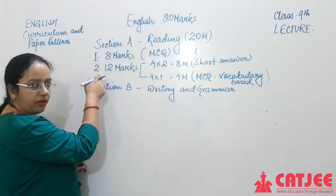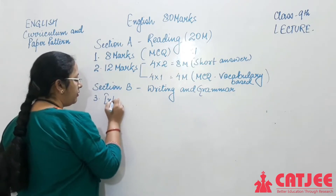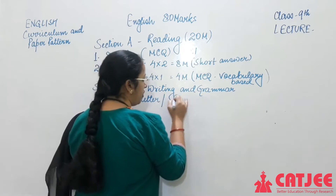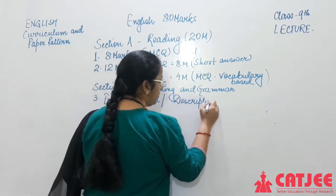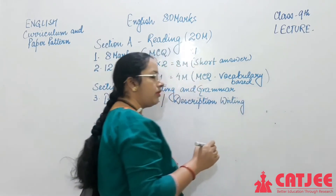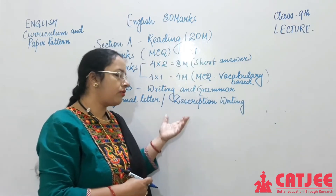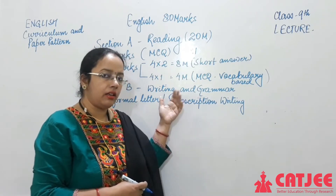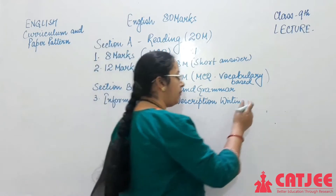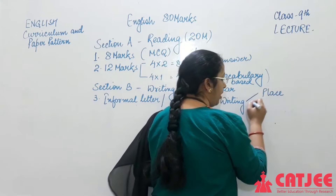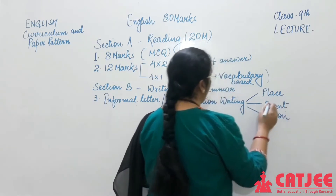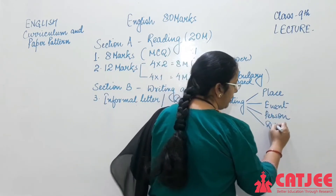Questions 1 and 2 are already covered in Section A. Question 3 is Informal Letter or Factual Description writing. There will be an internal choice, or the school can give either of the two. Description writing may be about a place, an event, or a person.